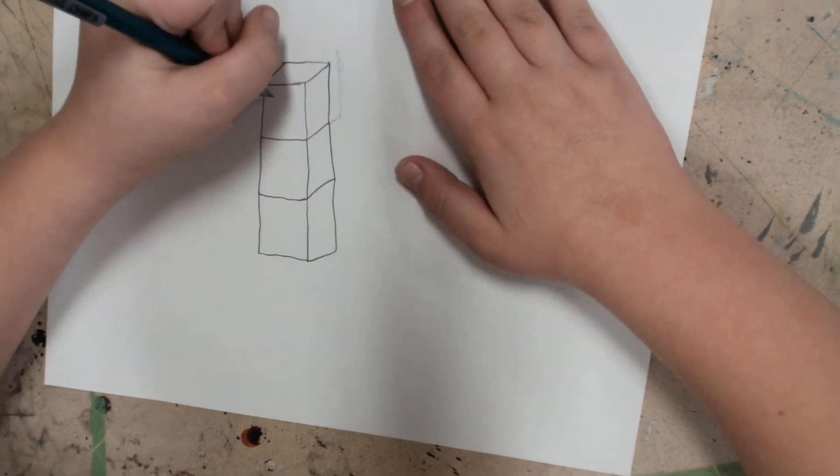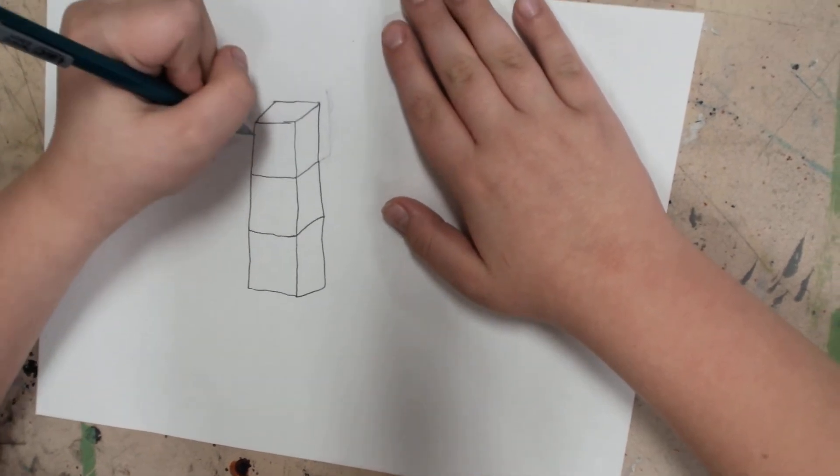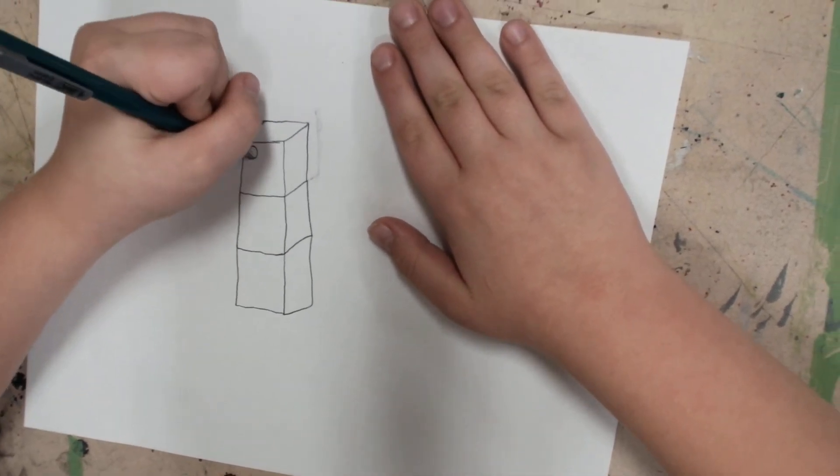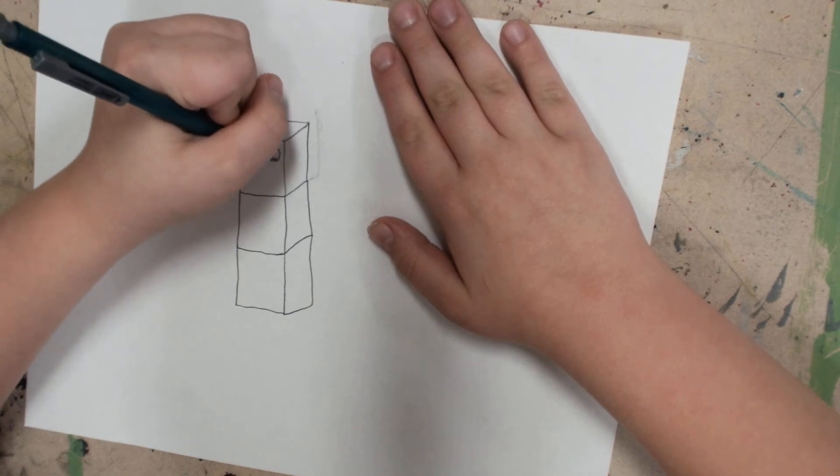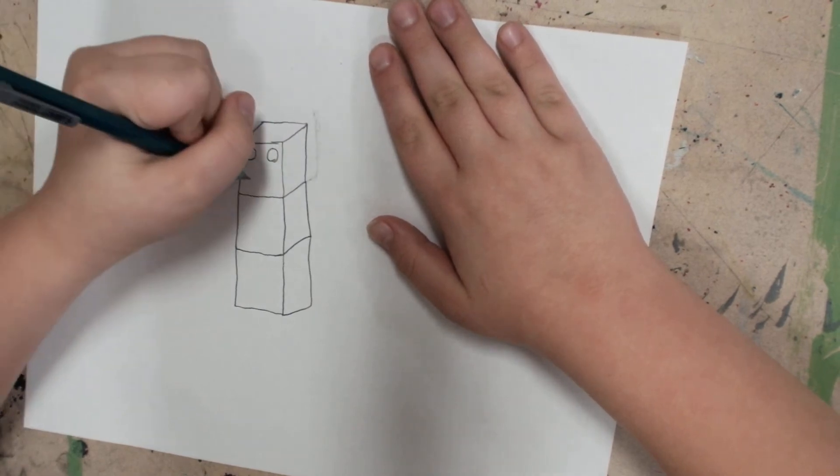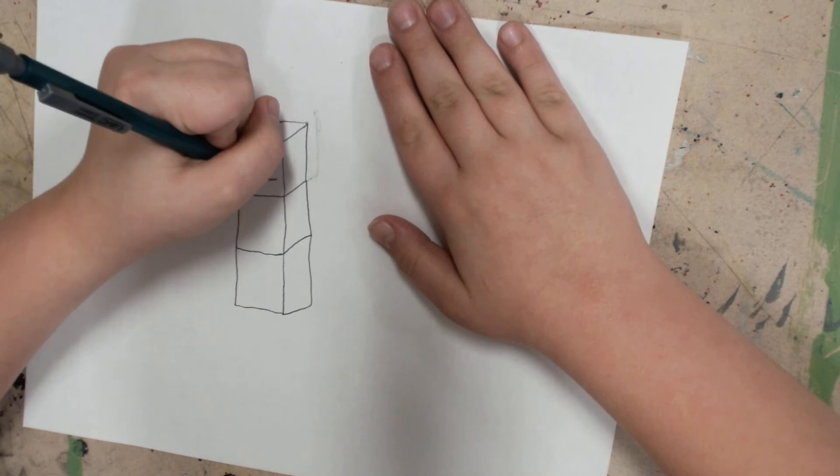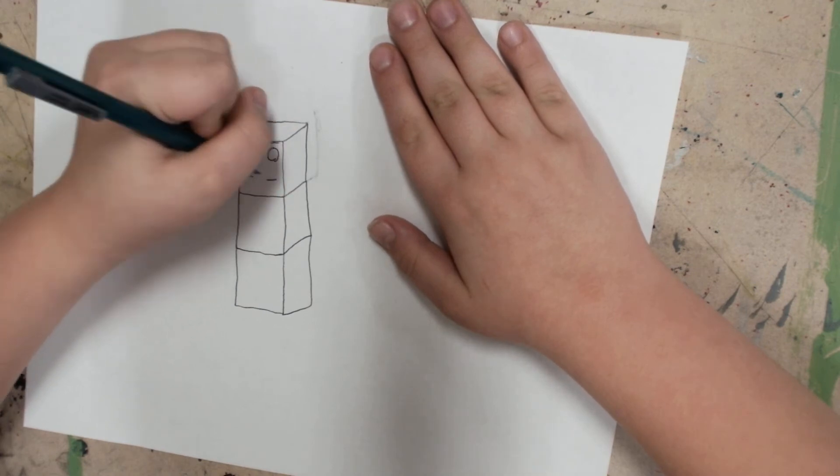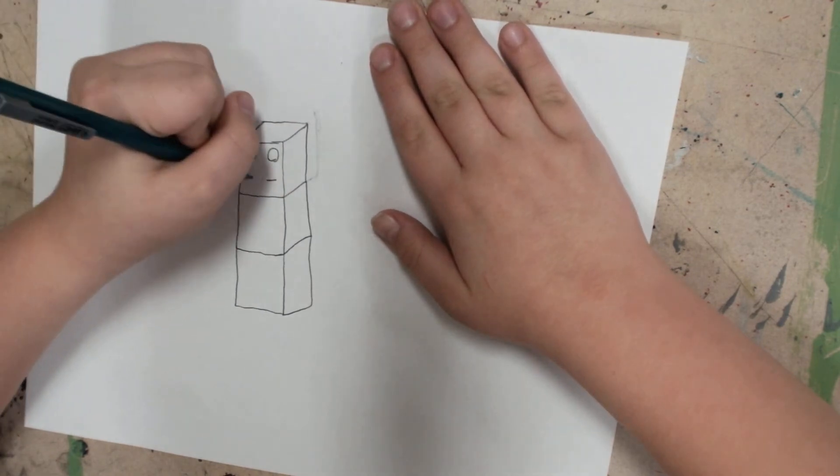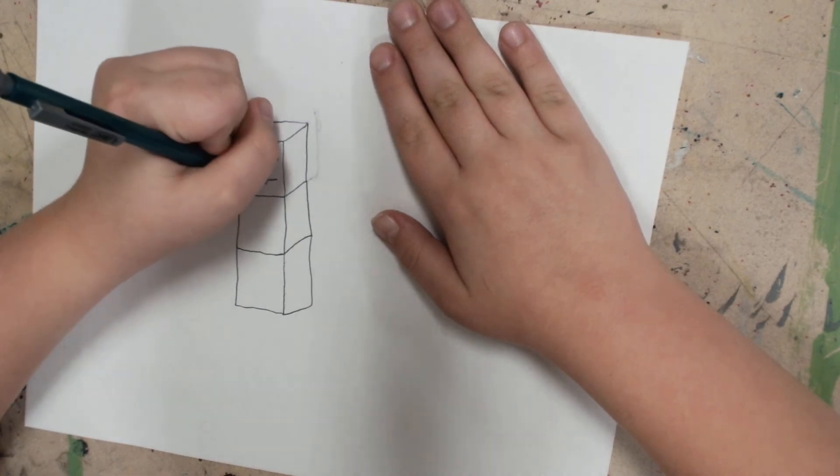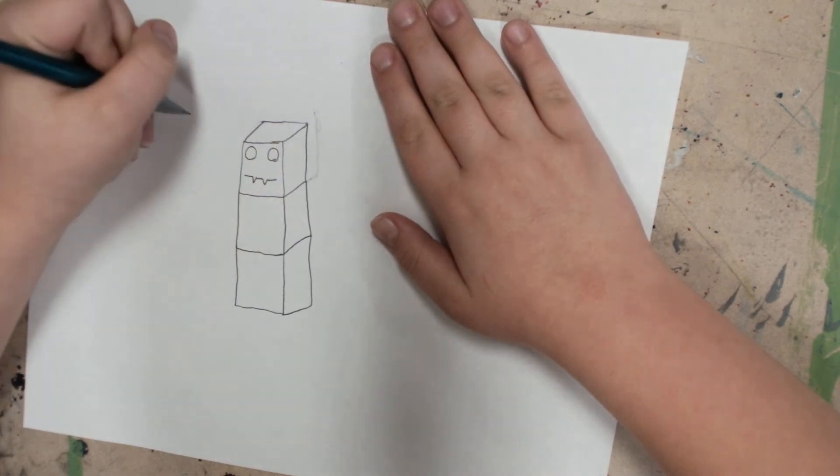Then go back to the top square. Put two circles for your eyes. Then two spaces like that. Then two V's. Then connect them.